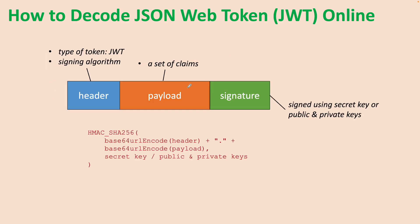Basically, a JSON Web Token contains three parts: header, payload, and signature. The header and the payload are encoded using Base64, so you can use any Base64 decoder to see the content of the header and payload of the token. But the signature is signed using a secret key or public/private keys, so it's important to verify the signature of a JSON Web Token.